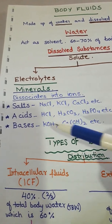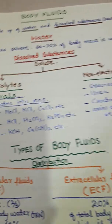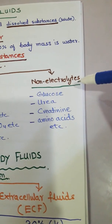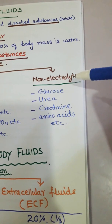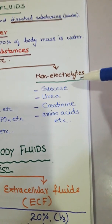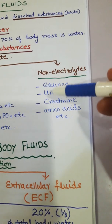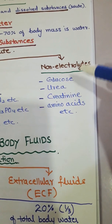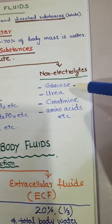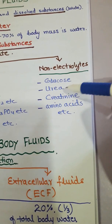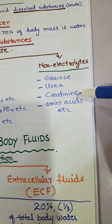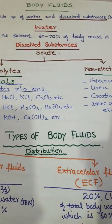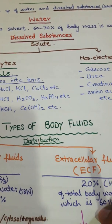Bases such as potassium hydroxide and calcium hydroxide are also electrolytes present inside living organisms. Non-electrolytes, on the other hand, cannot be dissociated into ions in aqueous medium. Examples include small molecules like glucose, urea, creatinine, and amino acids — these are the non-electrolyte substances present in body fluids.